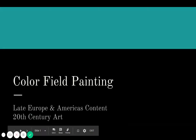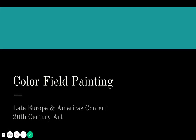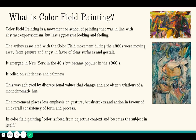This presentation is called Color Field Painting. It's part of our Late Europe and America's content — we're in 20th century art and we've just followed Abstract Expressionism. Color Field Painting was a movement or school of painters that was definitely in line with the Abstract Expressionists, especially in regard to finding new ways to put paint on a canvas, but they were in search of a calmer, more subtle effect.